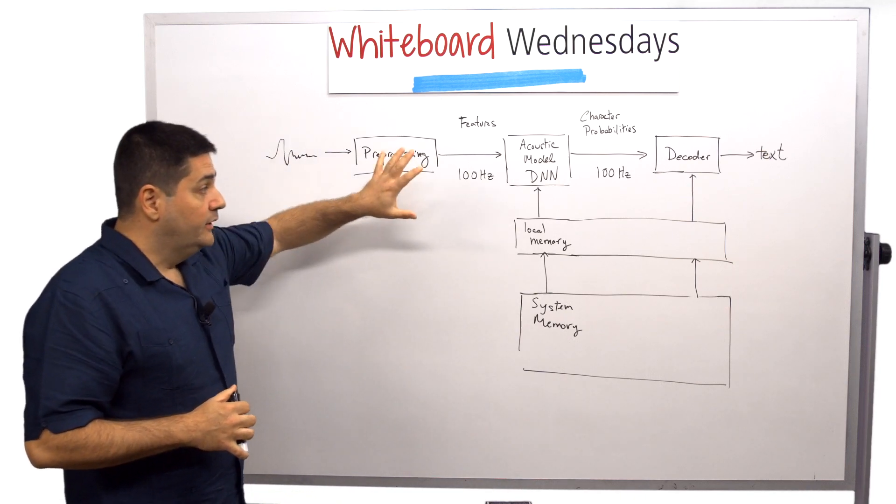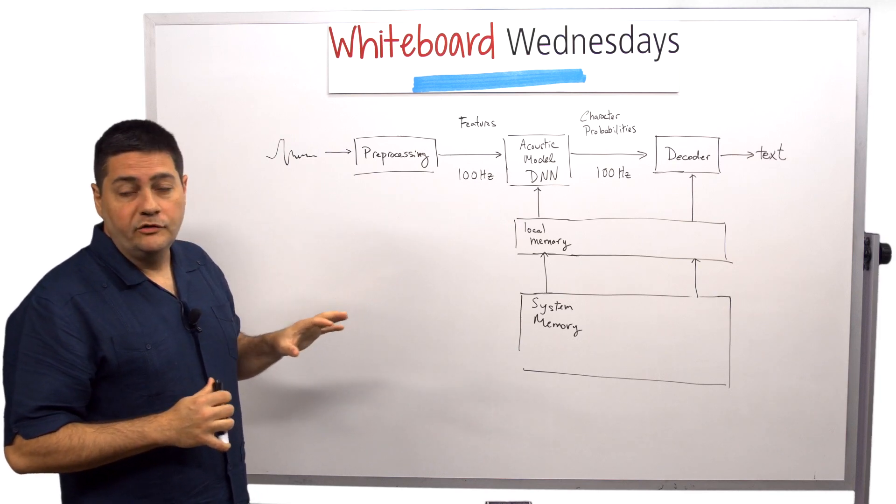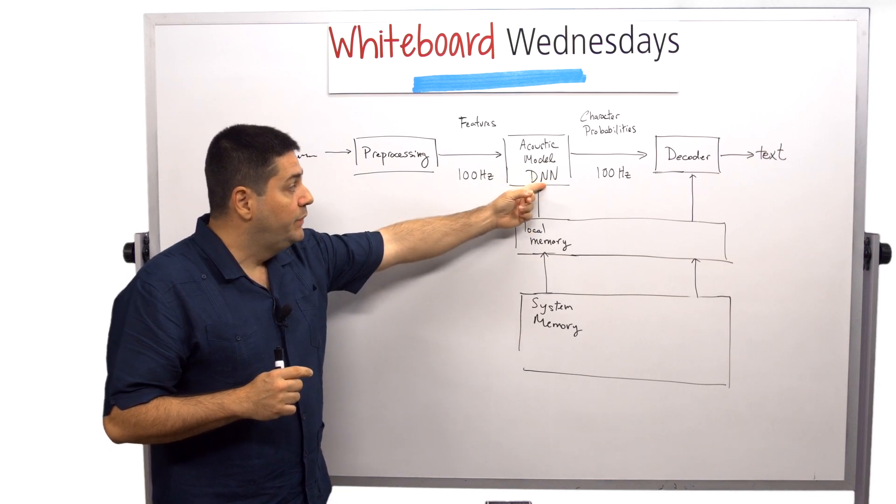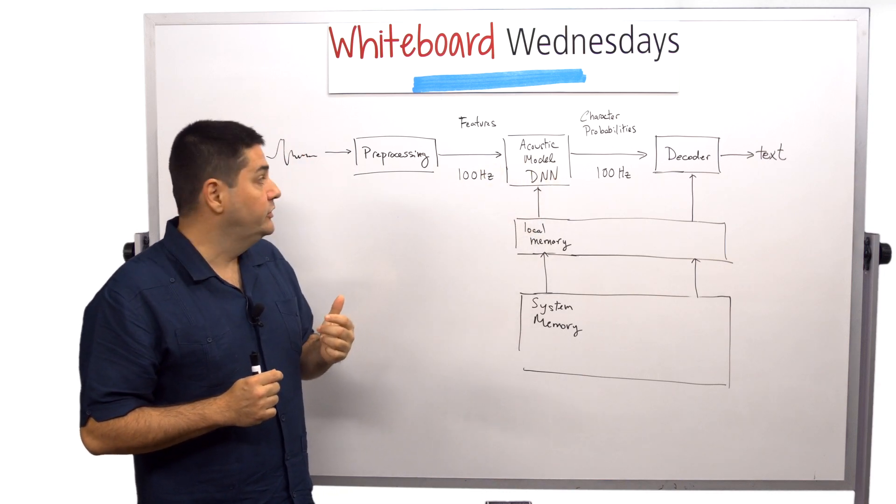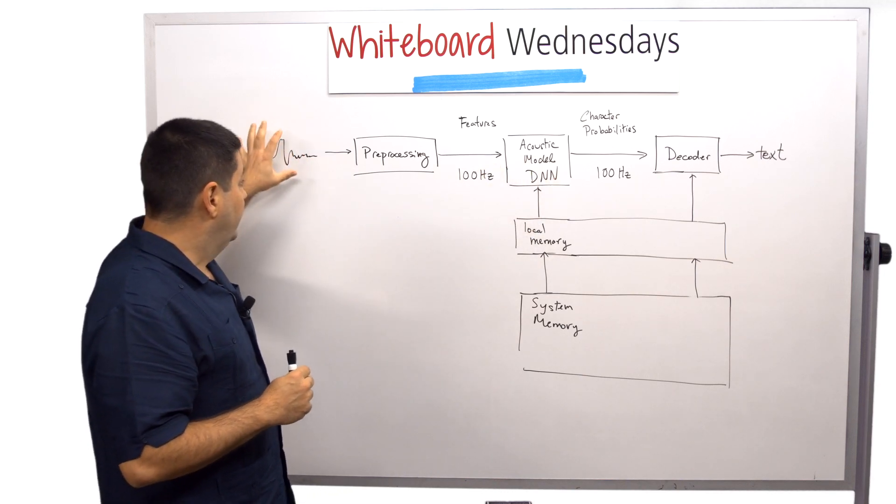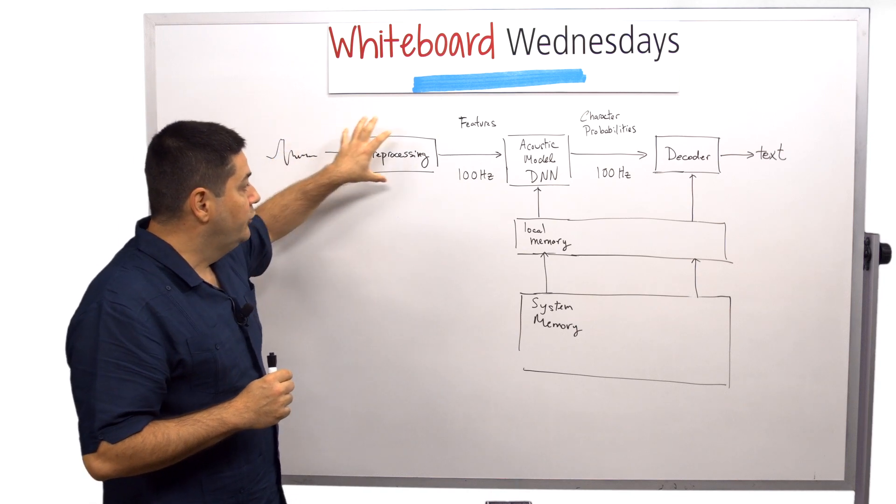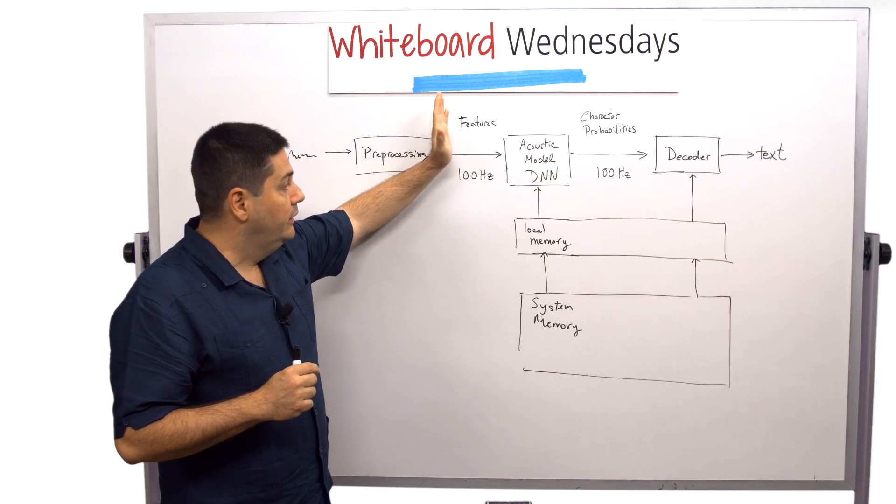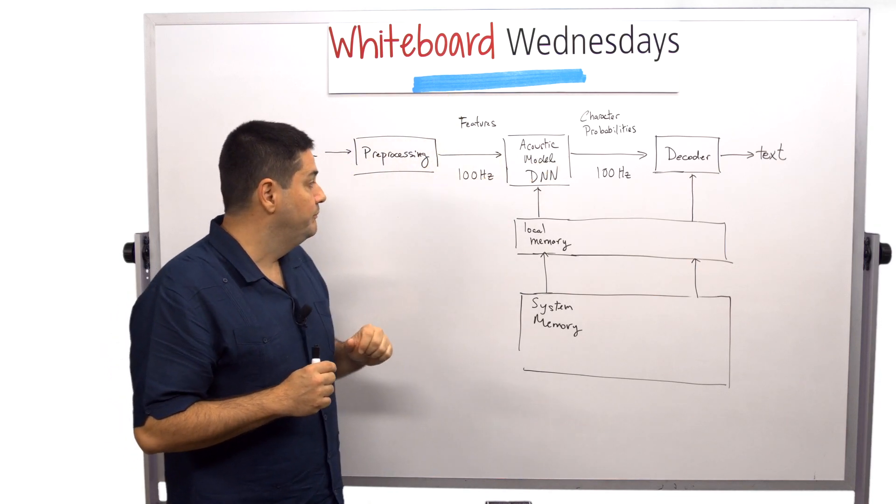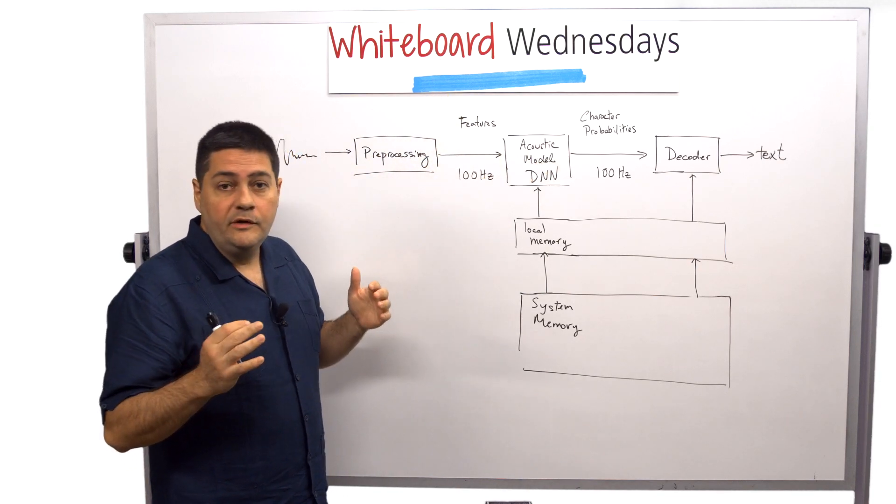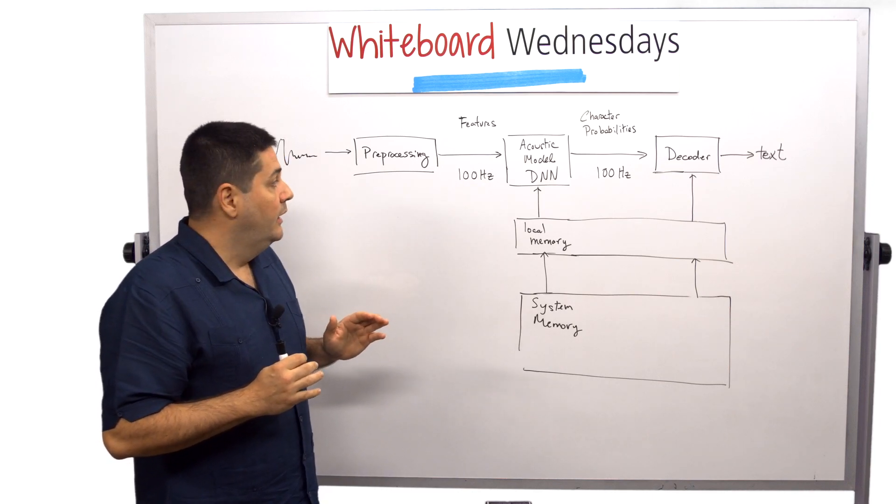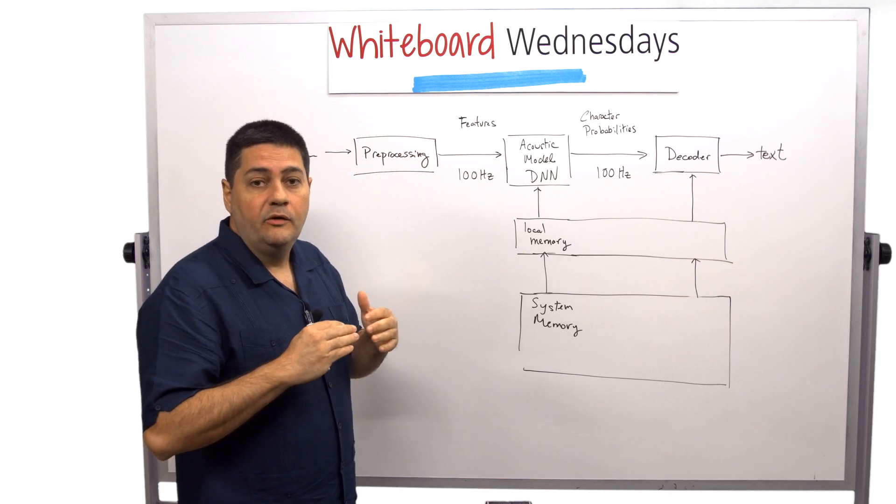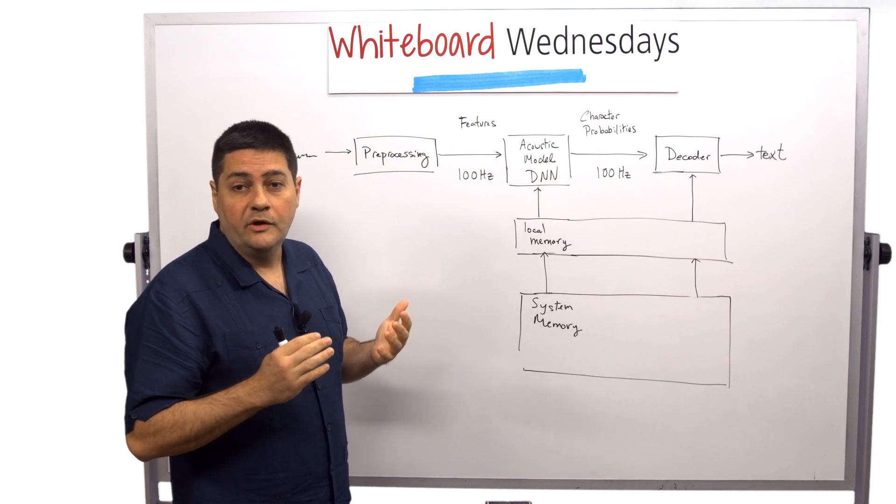Let's look at this simple automatic speech recognition system which for state-of-the-art systems is built based on deep neural network technology. We start with an audio stream that gets pre-processed into a set of features which are basically vectors streaming into the rest of the system. Let's assume that these features are streaming in at 100 Hz. These features can be as simple as the magnitude of the coefficients of an FFT.